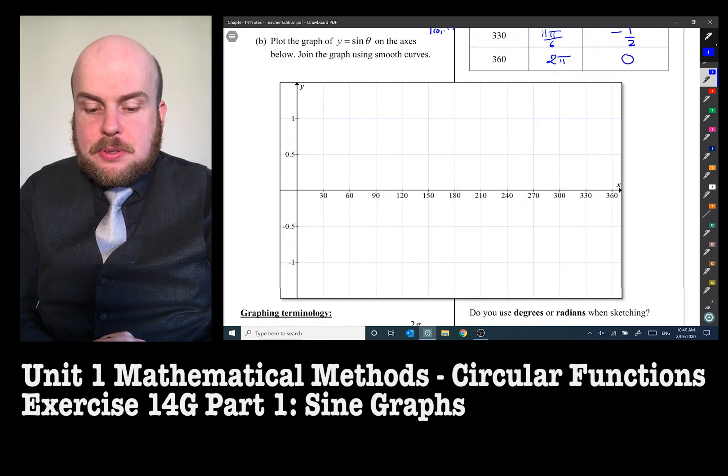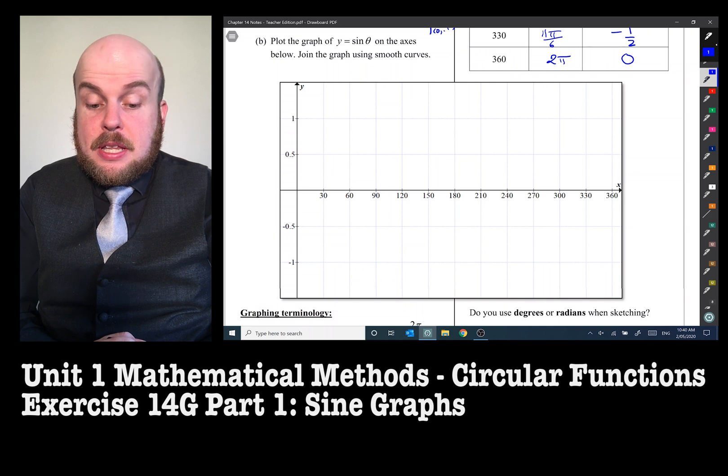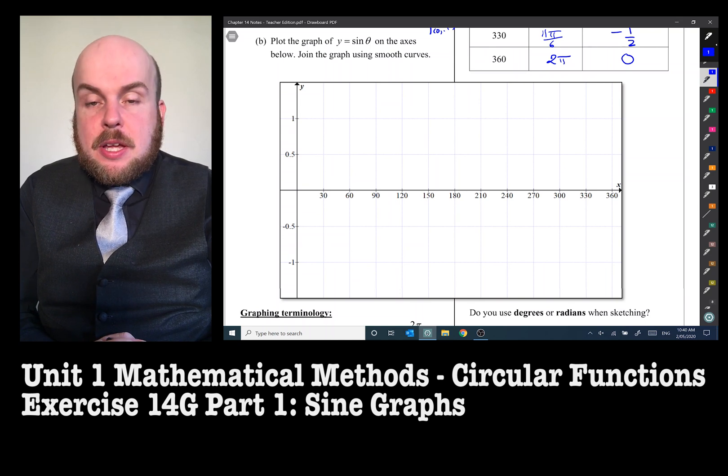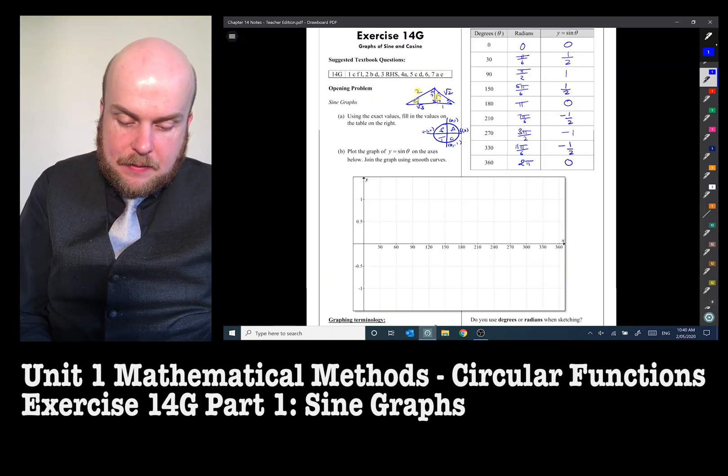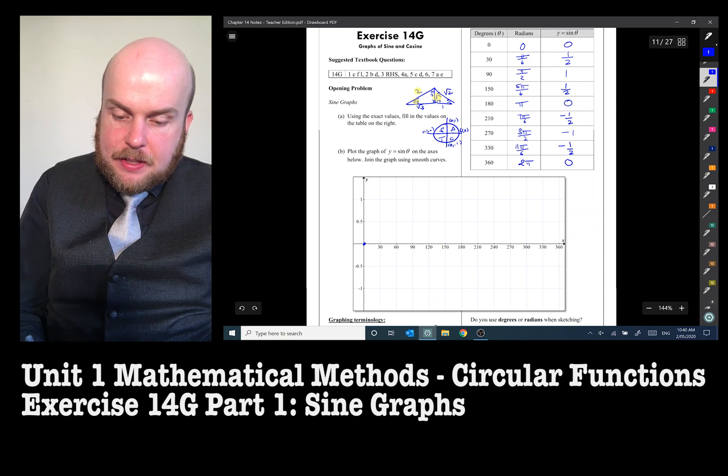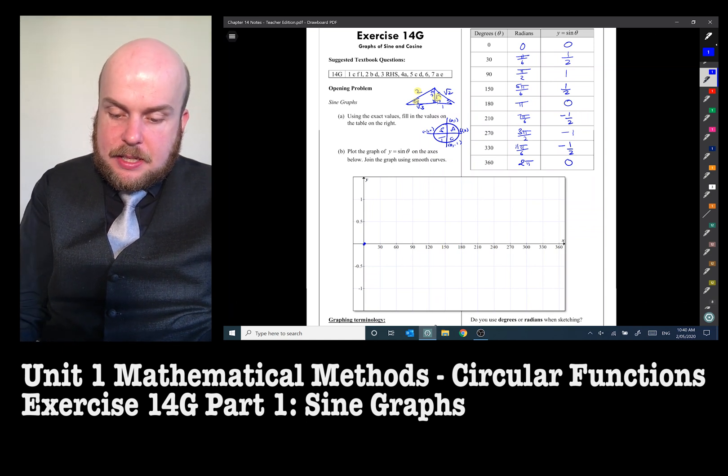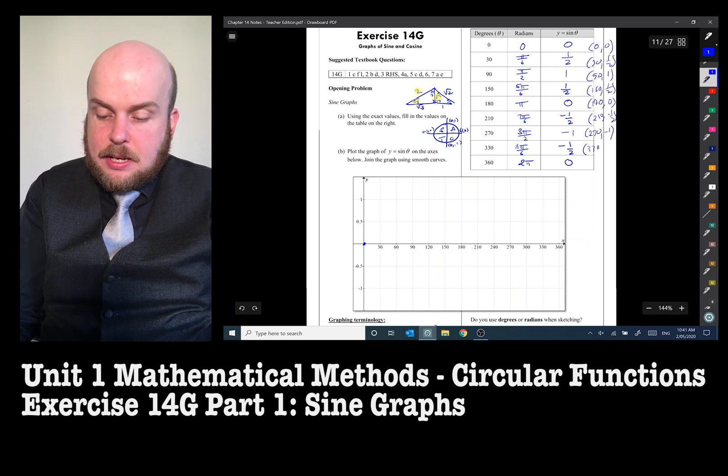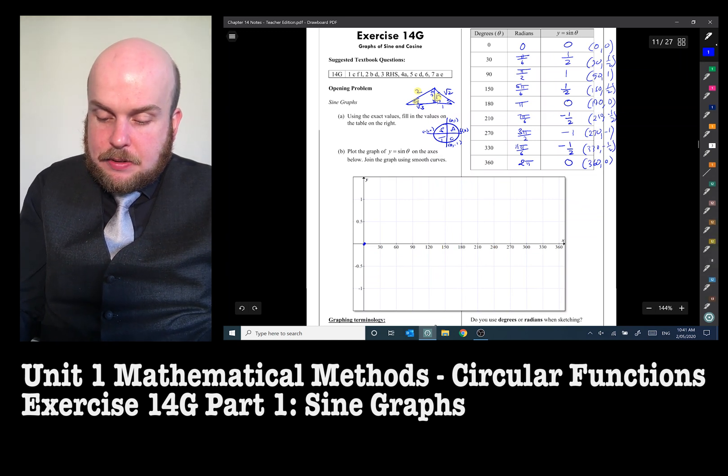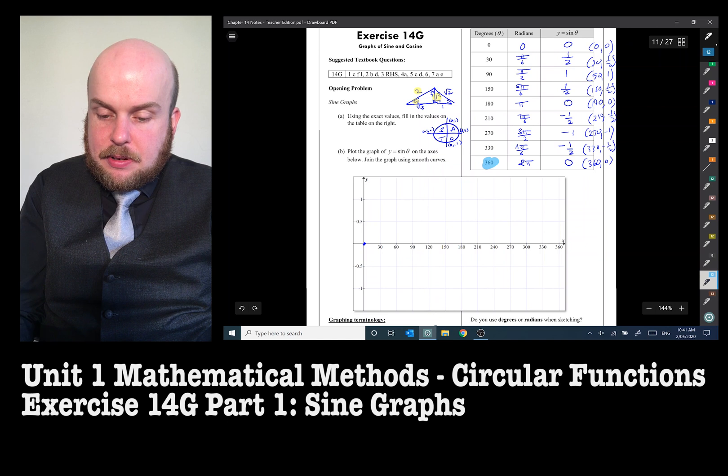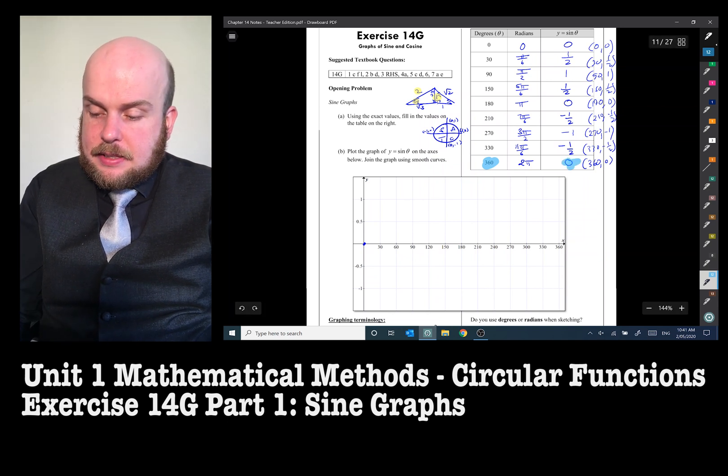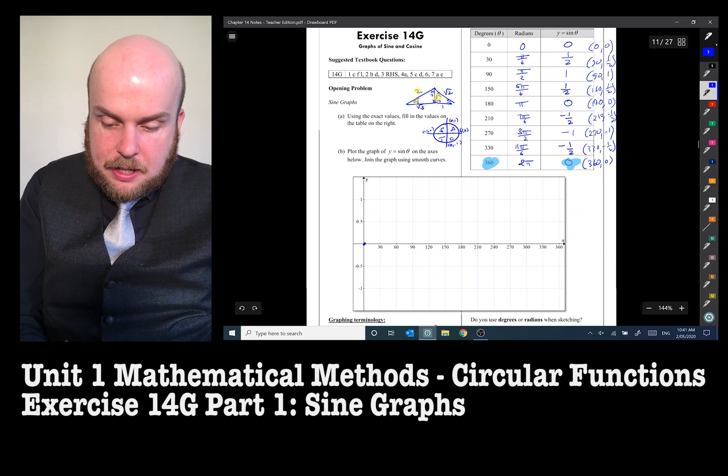So now we've filled in that table. Plot the graph of y equals sine theta on the axes below. Join the graph using smooth curves. So we're going to use that table that we established earlier to go and plot. So we have 0, 0. So this is all in degrees because it's got 360. So my coordinates are going to be,